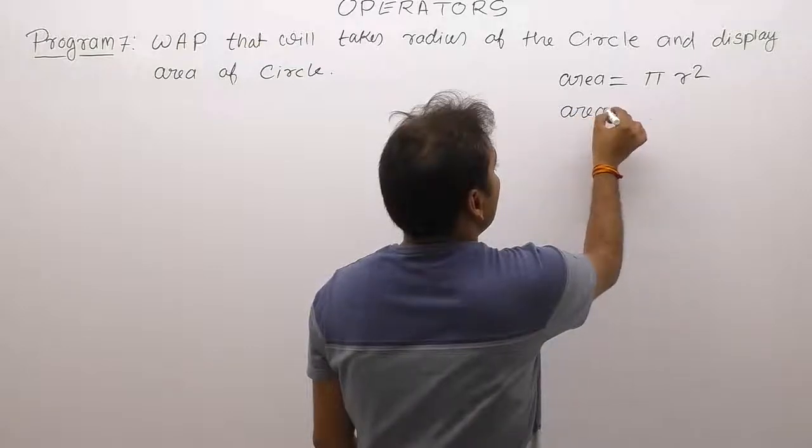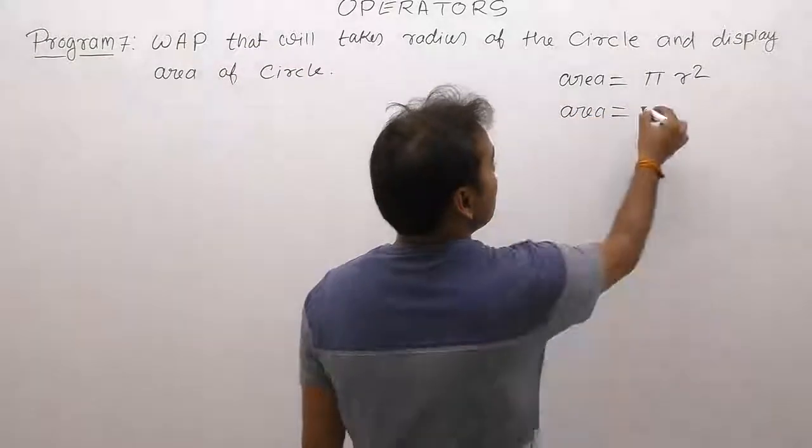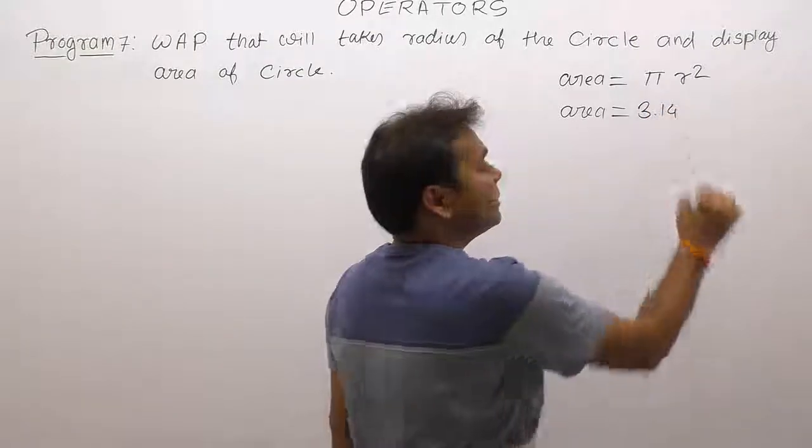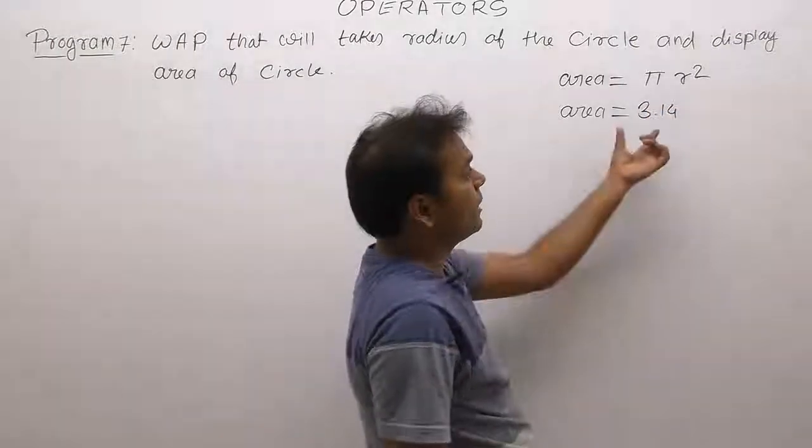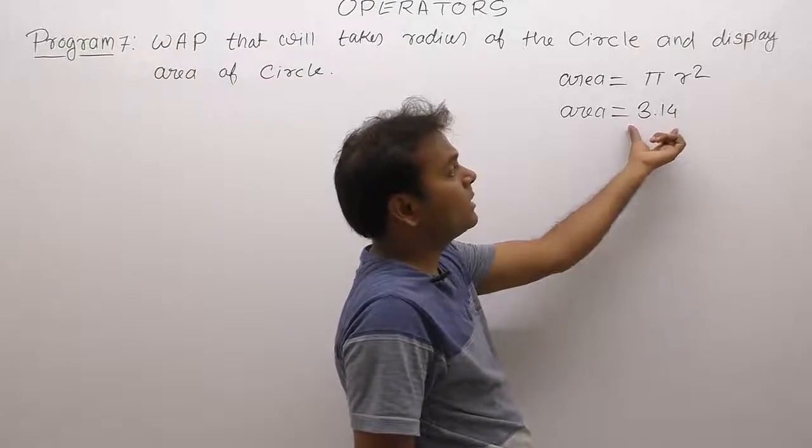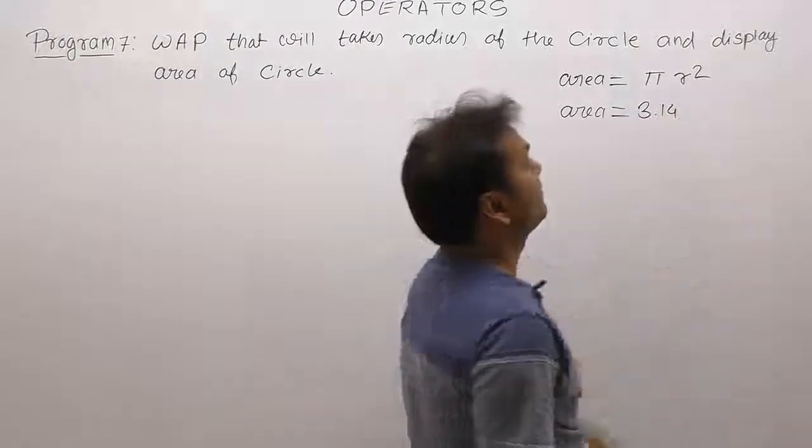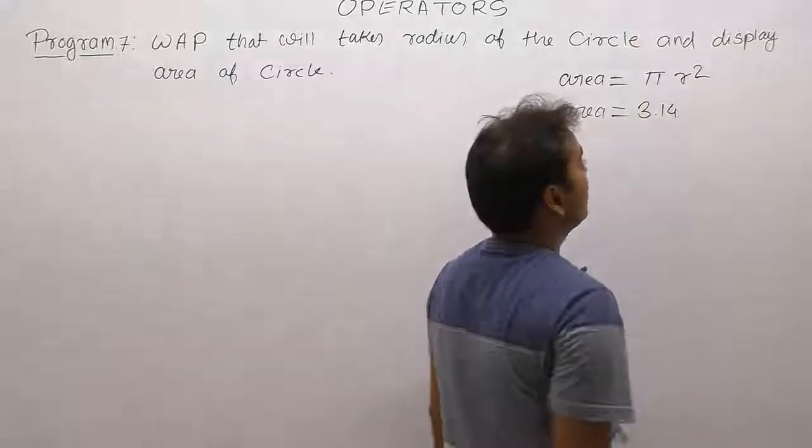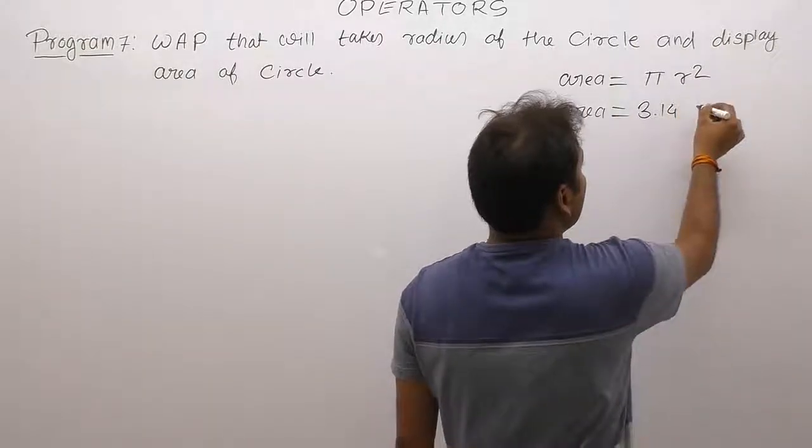Here pi is a symbol. The value of pi is well known for everyone: 3.14. It can be replaced as 22 divided by 7 or 3.14. Then how to write r square inside a C program?